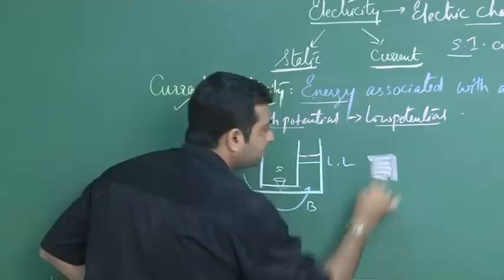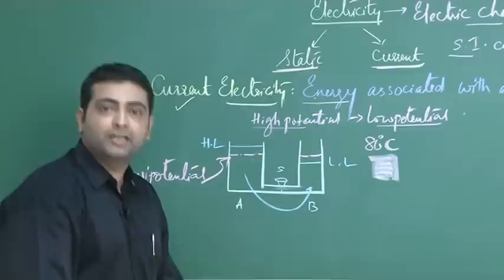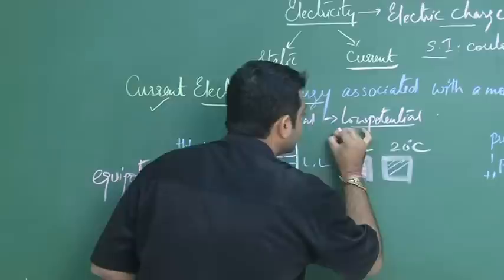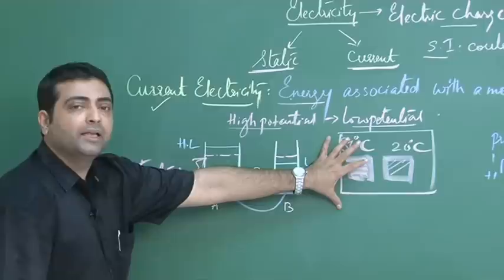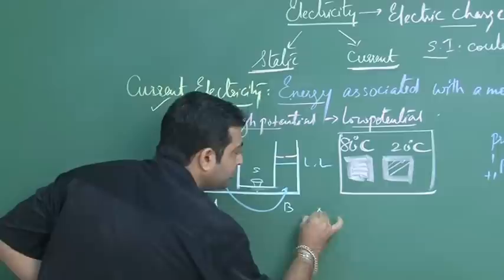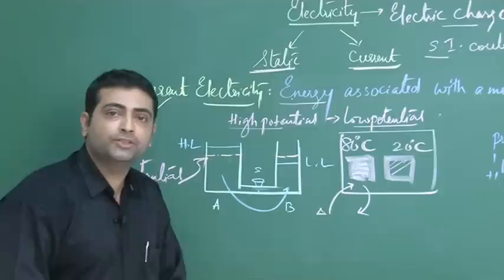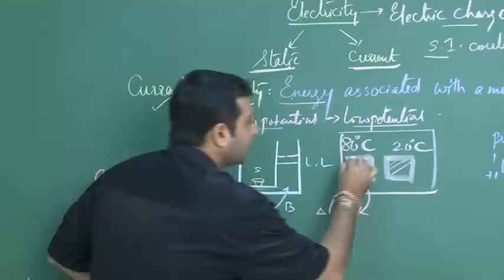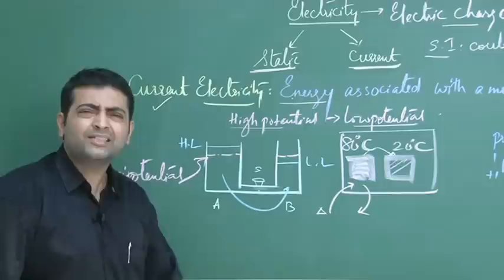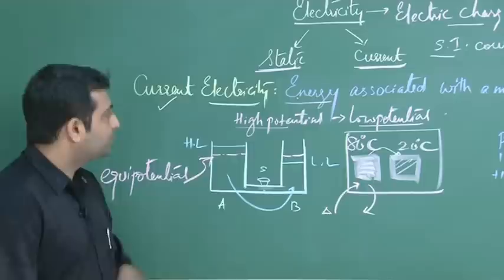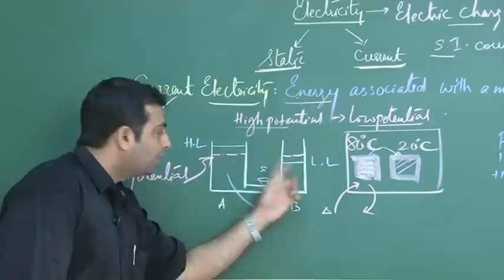Take one more basic example. Suppose I consider a hot body at a high temperature — 80 degrees Celsius — and another body at a low temperature, 20 degrees Celsius. Both bodies are placed in isolated surroundings — an insulator — so that no external heat energy enters or leaves the system. In those conditions, the body at high temperature will certainly lose heat energy, and the body at low temperature will gain it. Heat is a form of energy, and energy always flows from high potential to low potential.